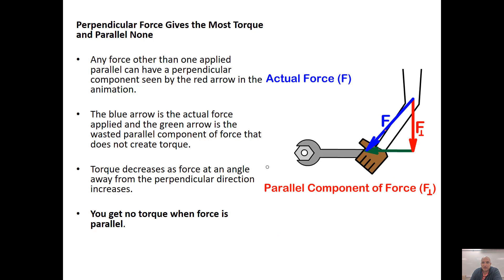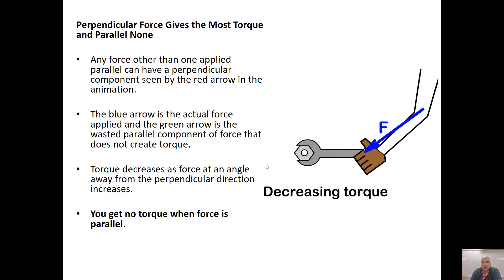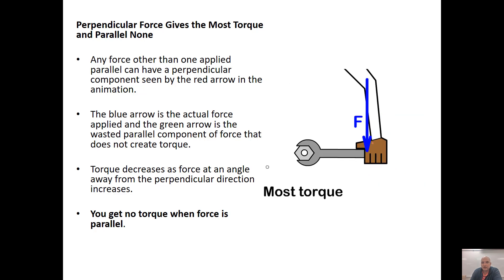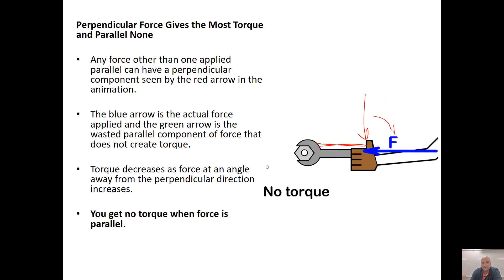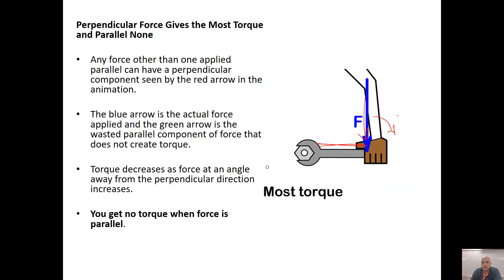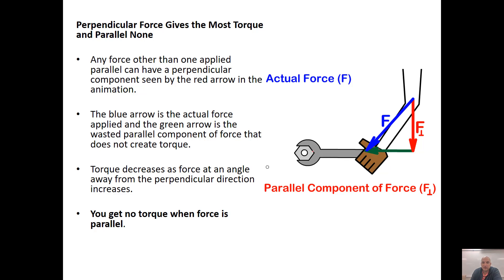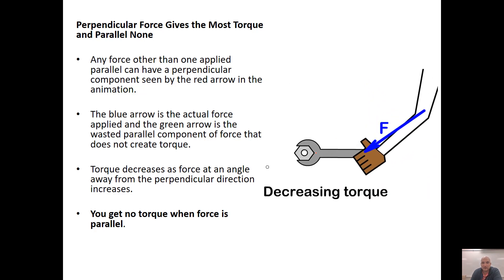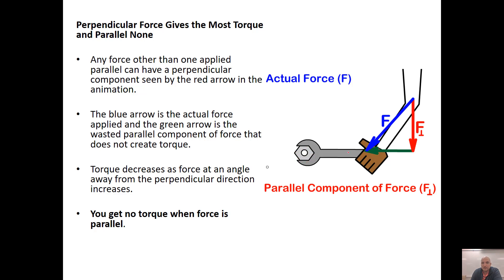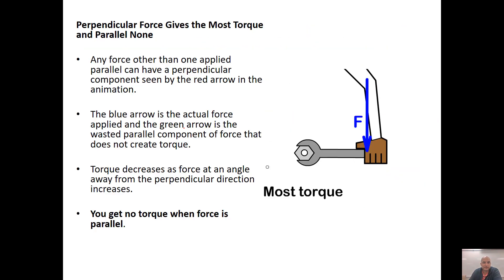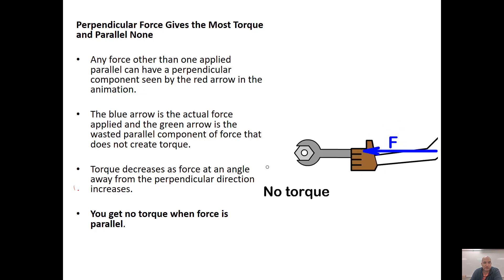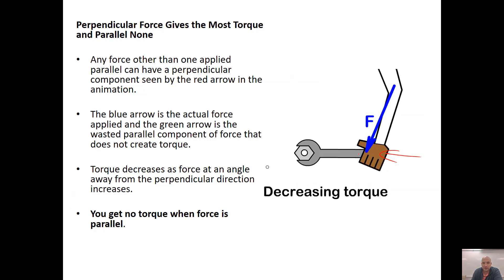Not always is it easy to apply a force directly perpendicular — you might have to apply force at a different angle. The further away from perpendicular you go, the less perpendicular force you get. If you're directly parallel to the lever, think about trying to turn a wrench by pushing parallel to the axis: nothing happens. The best approach is to apply force as perpendicular as possible, and as far away as possible. No torque is created when force is parallel to the lever.